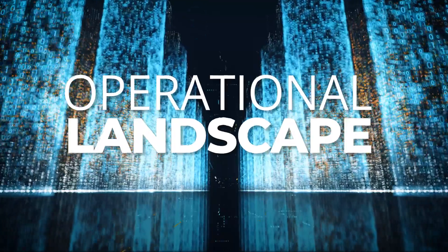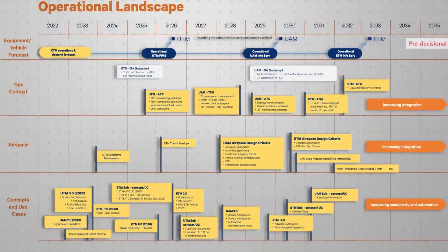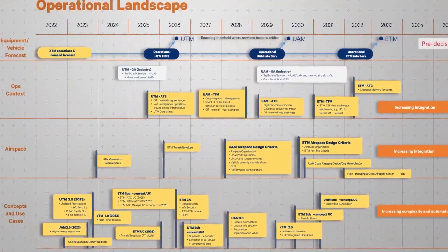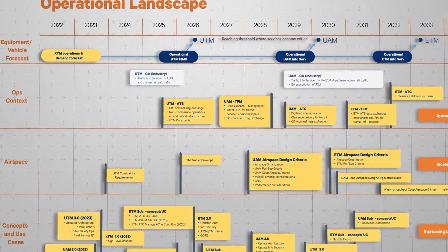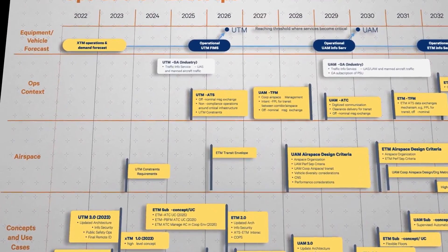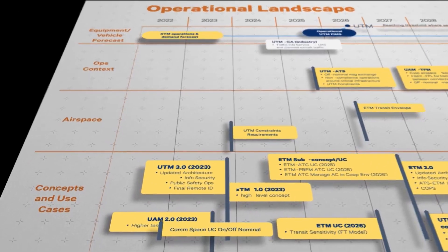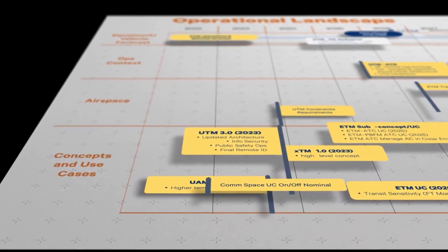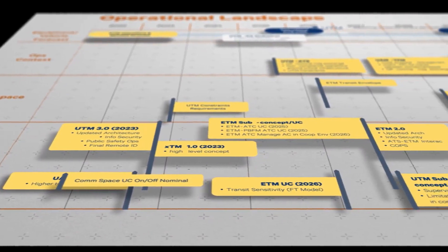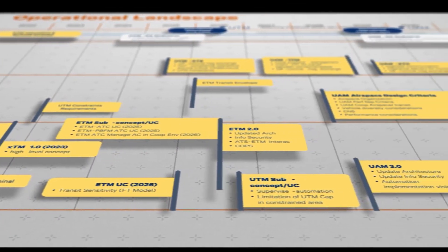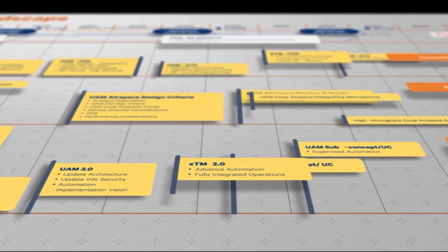The Operational Landscape depicts activities required to enable future operations, with a focus on incorporating diverse operations into the NAS. To accomplish this, it leverages technology advances in vehicle, operations, and information sharing to improve strategic planning and enable new, diverse vehicles to safely access airspace without undue impact to existing air traffic services, or ATS.